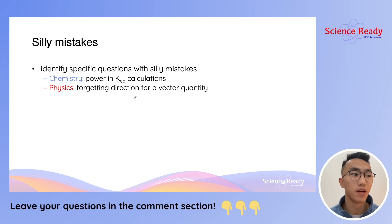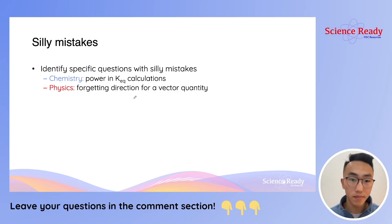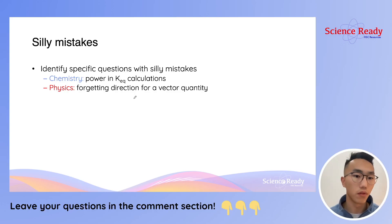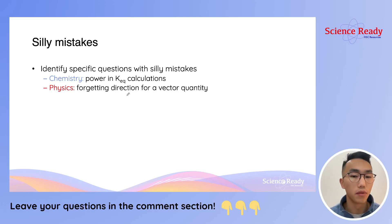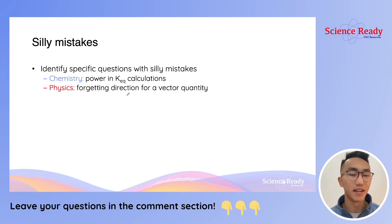You may have written down the wrong working out, or you may have typed the equation or calculation into the calculator incorrectly. It could also be non-calculation related. For example, in physics, you may have forgotten the direction or the correct unit for a vector quantity. And what's frustrating is that most students find it difficult to correct and avoid silly mistakes in exam conditions.